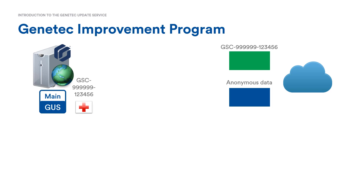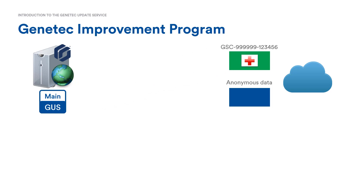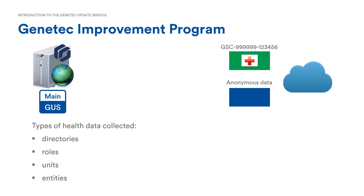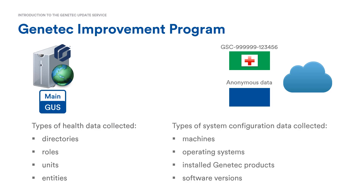The default value in the installation is Yes, I want to participate. With this option, you are choosing to share your system information and system ID with Genentech to help proactively support your system and improve communication. The two types of data that are being sent are health data and system configuration data. Health data includes the directories, roles, units, and entities that you have on your system, and the up and down times of each of them. The system configuration data collected includes the machines, operating systems, and Genentech products installed, as well as the versions of each.